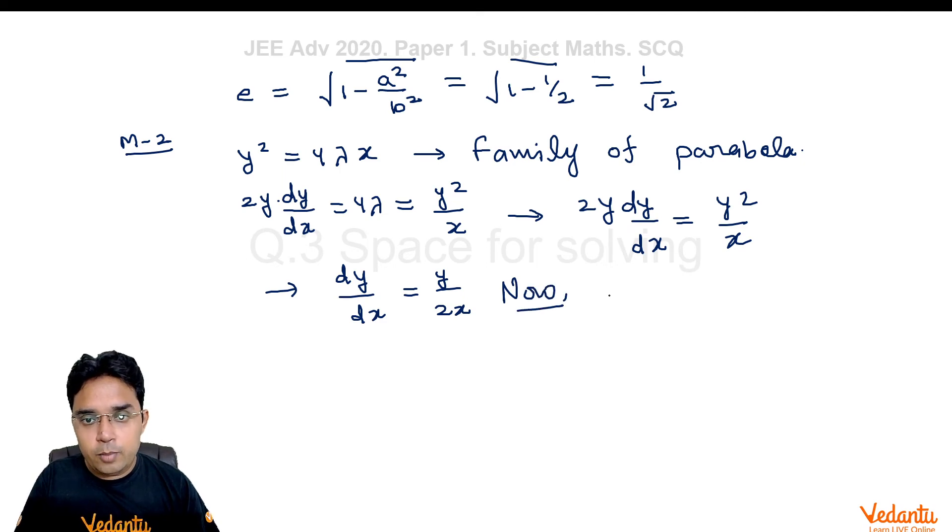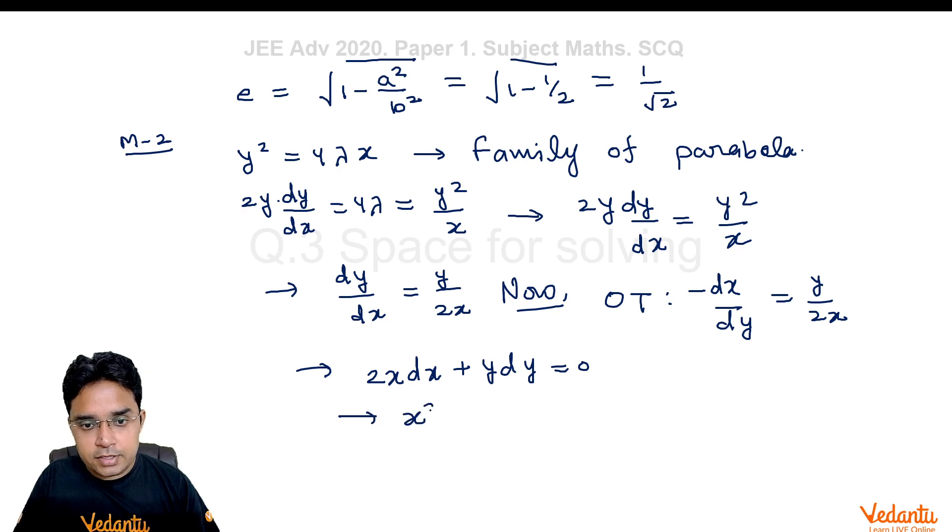Now, that OT I was talking about, orthogonal trajectory, it is formed just by writing -dx/dy in place of dy/dx. So, this new differential equation is 2x·dx + y·dy = 0 and after solving this we get x² + y²/2 = k.